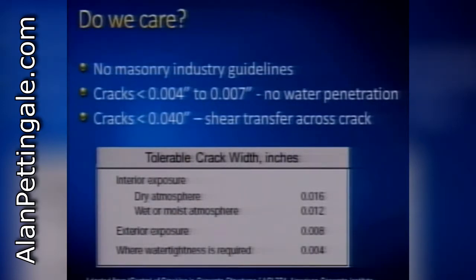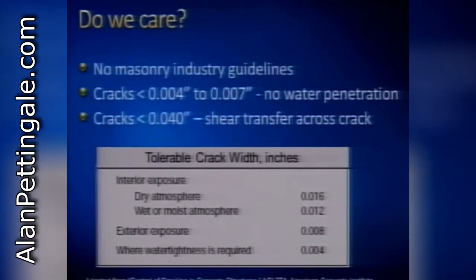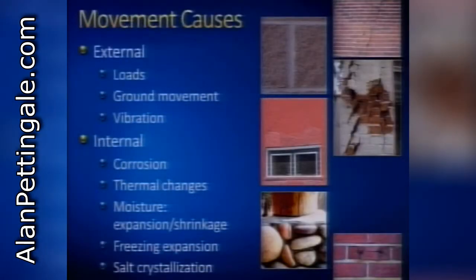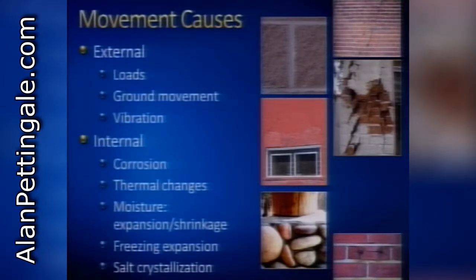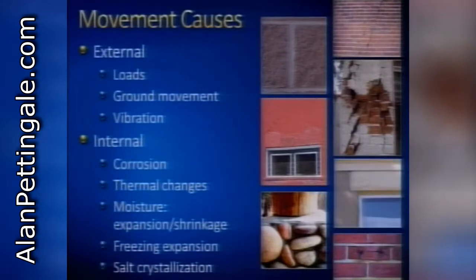We need to dress those cracks to address durability issues and the longevity of our buildings. Right now there aren't any masonry industry guidelines telling us what types of cracks are significant. I've borrowed a table from the American Concrete Institute — they give us some general guidelines about what crack widths you can live with in concrete buildings, and those are pretty good guidelines. All cracks are caused by movement, or more precisely for the engineers, by strain. How that movement and strain develops is really an important concept.